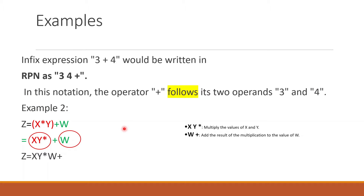Now let's take an example. Suppose I have this expression 3 plus 4. This is written in infix notation where the operator is in the center of the two operands. Now how can we write it in Reverse Polish Notation? We have to move from left to right, and the moment we encounter the first operator, we move it to the right side of the expression. So the RPN notation is 3 4 plus.